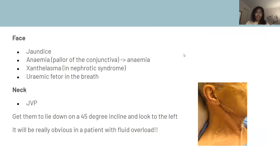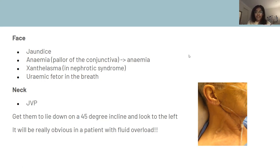Moving on to the face: check for jaundice, ask the patient to pull their eyelids down to look for pallor of the conjunctiva, check for xanthelasma (fatty buildup around the eyes), and uraemic breath. Then test for JVP — it can be very obvious in patients with fluid overload. In second year it can be hard to see on peers, so look it up on YouTube to understand what it looks like; it's very obvious on actual patients with fluid overload.